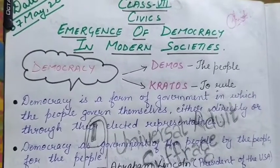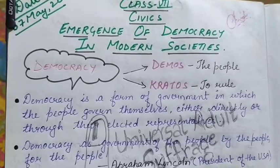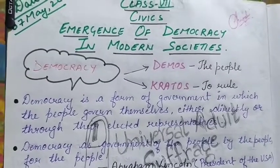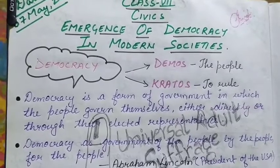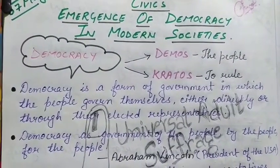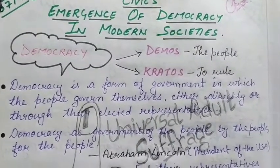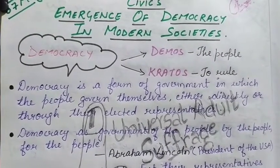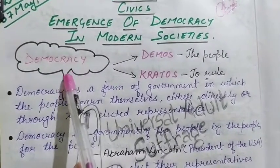Hello my dear students, welcome to this class. This is Class 7, Chapter: Emergence of Democracy in Modern Societies, part of Civics. This is the last sub-topic from this chapter. So today's topic is Democracy. I already taught you about this term very well, so now let's start about Democracy.